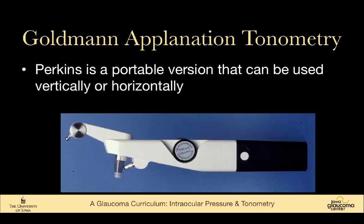The Perkins tonometer is a portable version of Goldman applanation tonometry. It's not part of a slit lamp, so it can be used in patients who are unable to get to the slit lamp — such as wheelchair-bound patients. It's also used for exams under anesthesia in children who are asleep.